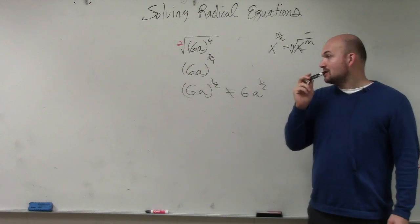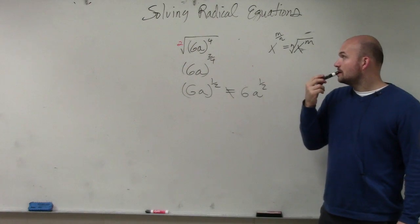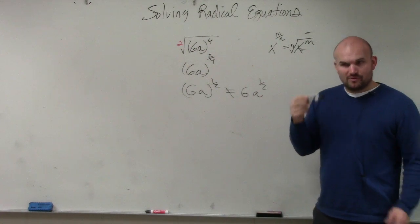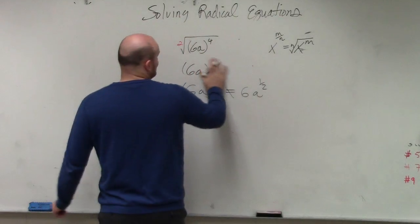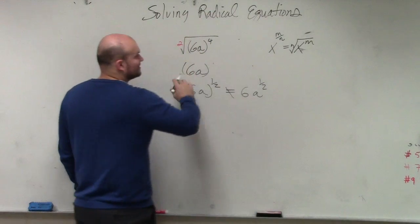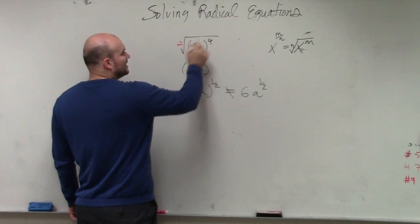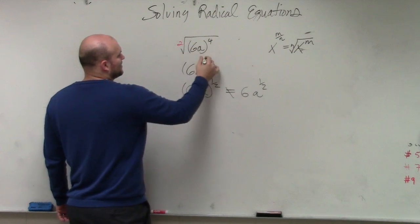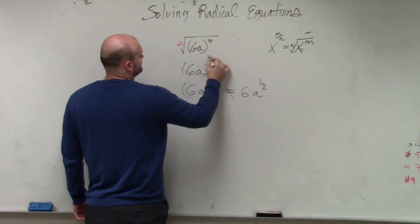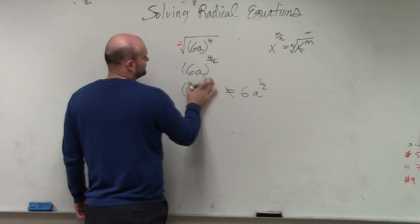Student: Wouldn't it be 4 over 2? Teacher: It'd definitely be 4 over 2. Thank you — I switched those around, even though I said it right. The index is always your denominator. Thank you.